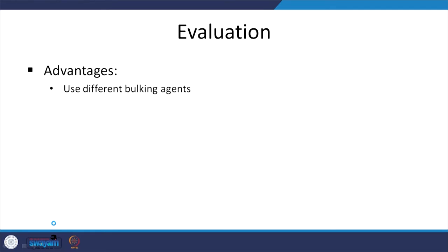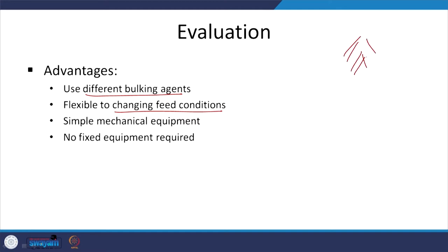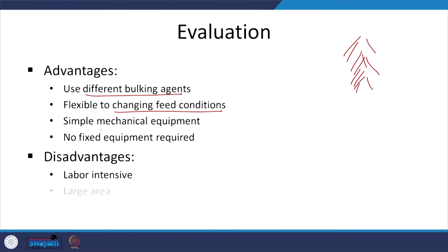Advantages: you can use different bulking agents — unlike in-vessel composting — and it is flexible to changing feed conditions. With just a pile and a front-end loader for mixing, no fixed equipment is required. Disadvantages: it is labor intensive, a large area is required, and there is high operator exposure. Large area is needed because typical pile heights are limited — maybe to waist height, around a meter — depending on how well you can aerate it.